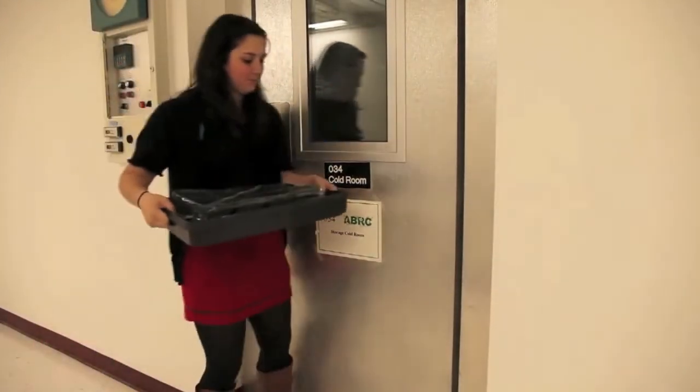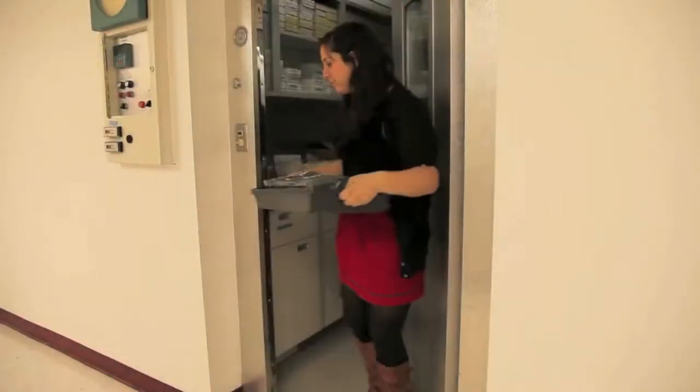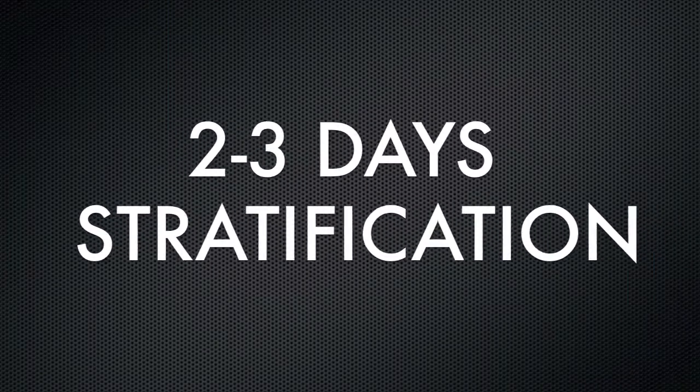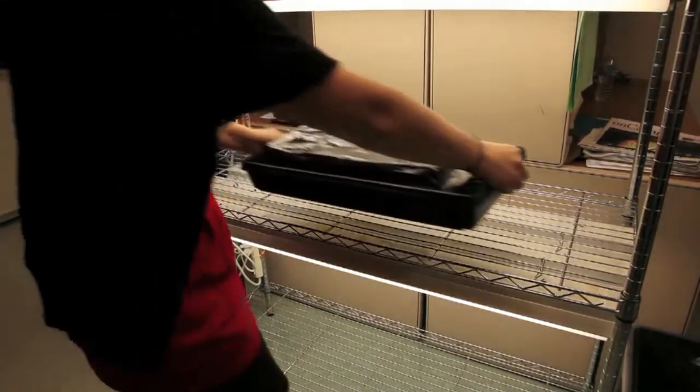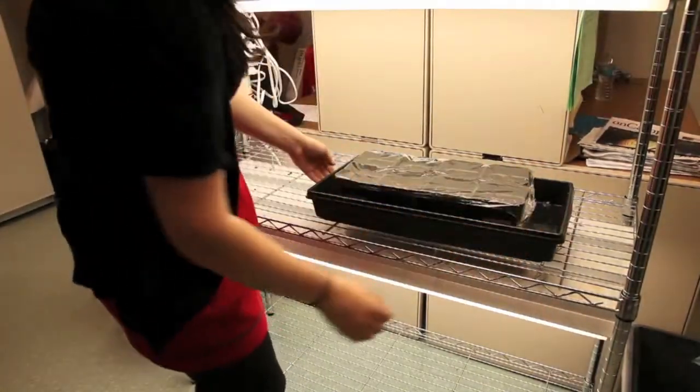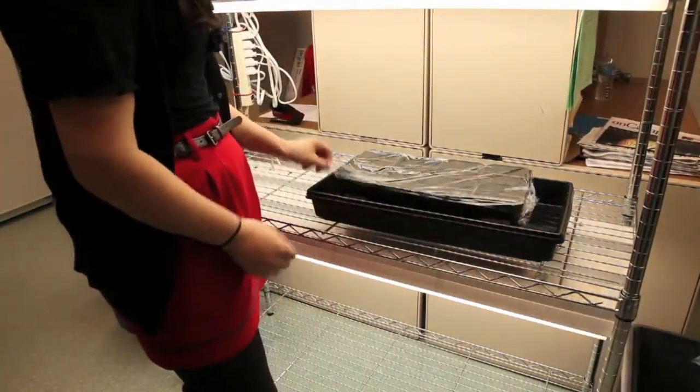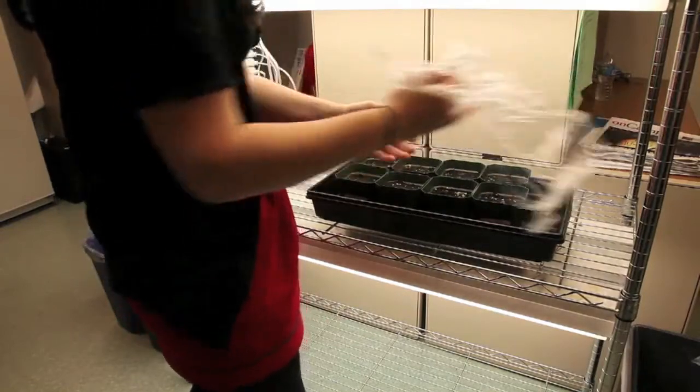Place the trays inside a cold room or refrigerator. After two to three days of stratifying, take the plants out and place them in an area to grow, such as a light rack or lighted bench. Make sure to remove the plastic wrap from the trays.